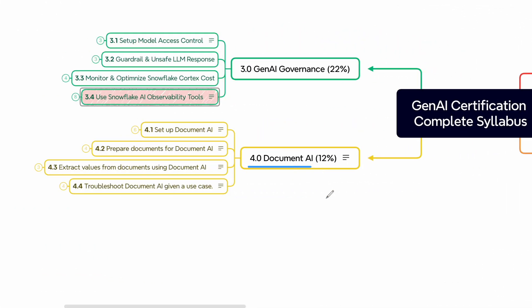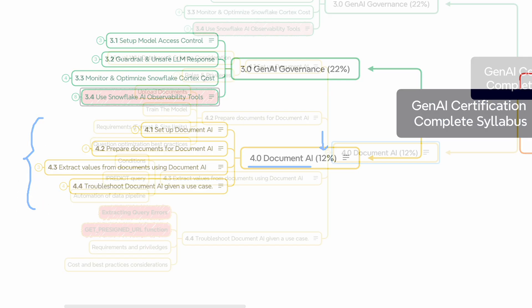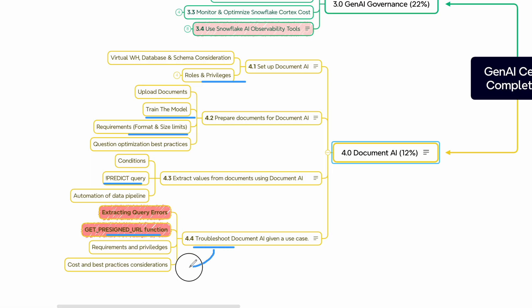Domain 4, DocAI, is the smallest section with just 12% weightage. With a few hours of hands-on practice, you should be able to answer almost all questions from this domain. Focus on privileges, model build, the get pre-signed URL function, data formats, and basic troubleshooting.